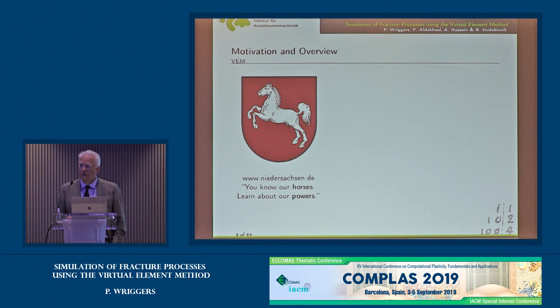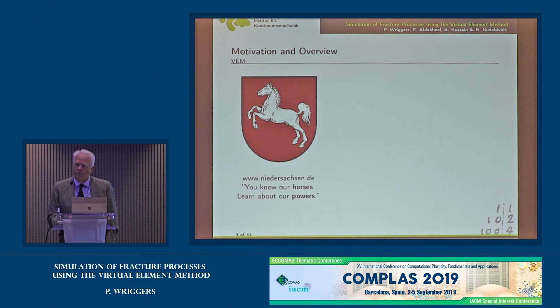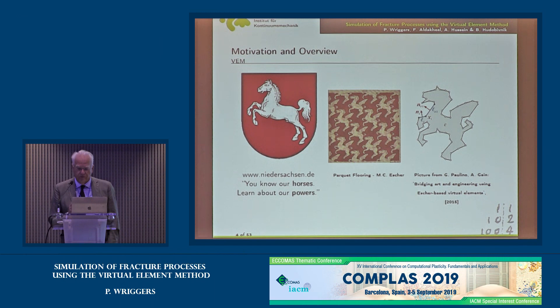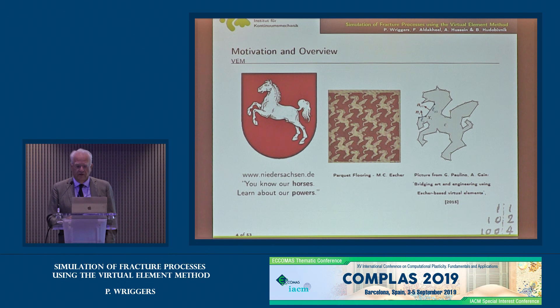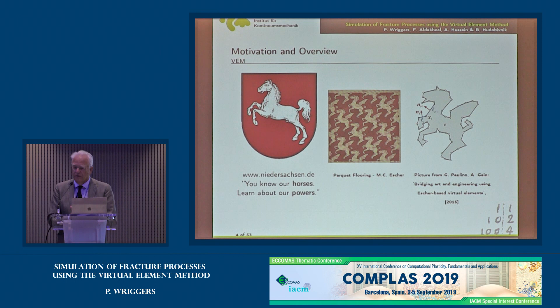Our university is from Germany, in Lower Saxony. Lower Saxony's coat of arms features horses, because it's basically an agricultural state — besides the Volkswagen company there. But why did I put a horse here? Because I like to introduce the virtual element method, and there is a very nice painting or parquet flooring by Escher where you can have self-repeating horses. If you look to the right, you will see a horse which was actually designed by our colleagues Paulino and Gain, who designed a self-repeating horse — and this is one element. So it fits very well in our state to use these types of elements.